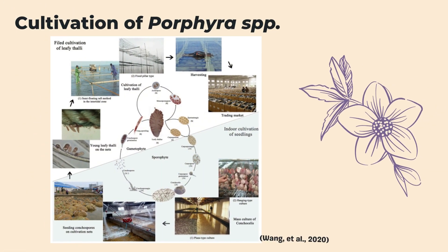Porphyra cultivation originated in Tokyo Bay about 300 years ago. Successful large-scale cultivation of Porphyra depends on fully understanding its life cycle, its requirements, and development of efficient cultivation processes. The cultivation of Porphyra occurs in two parts: the cultivation of seedlings and field cultivation of leafy thalli.